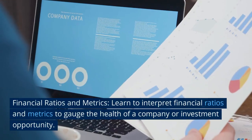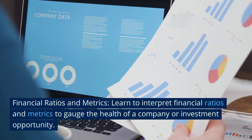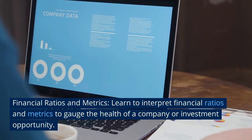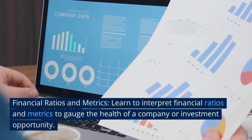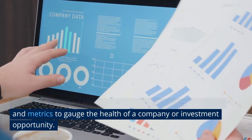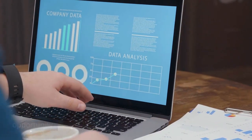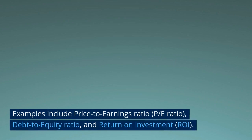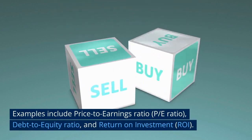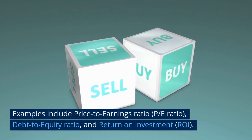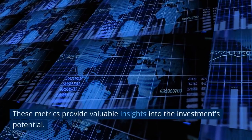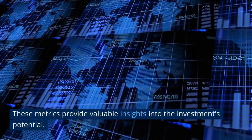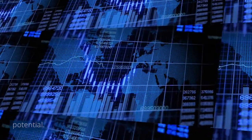Financial Ratios and Metrics: Learn to interpret financial ratios and metrics to gauge the health of a company or investment opportunity. Examples include the price-to-earnings ratio (P/E ratio), debt-to-equity ratio, and return on investment (ROI). These metrics provide valuable insights into the investment's potential.